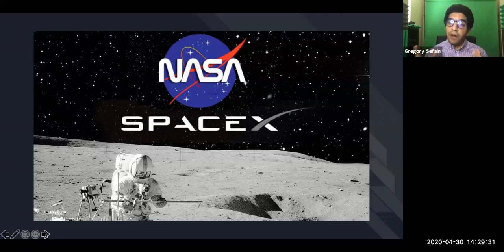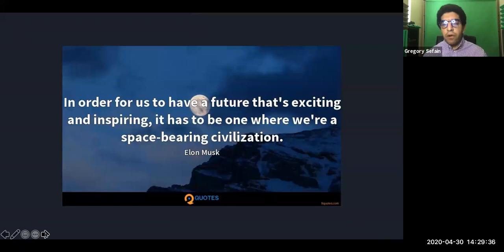And I'd like to end things today before I open it up for questions with a quote. I started with a quote, I'd like to end with a quote. And this one is by Elon Musk. And it's very momentous into where we can see our space program going. And it reads: in order for us to have a future that's exciting and inspiring, it has to be one where we're a space-bearing civilization. So maybe one day we'll be able to afford houses on the moon. Maybe one day we'll all get a chance to go to Mars on a vacation.